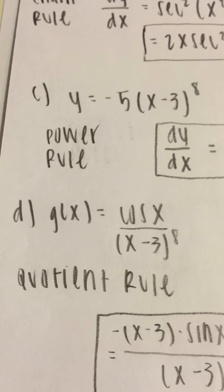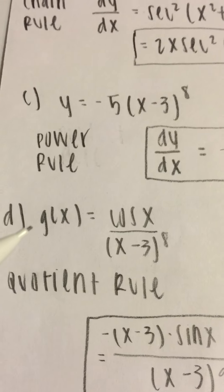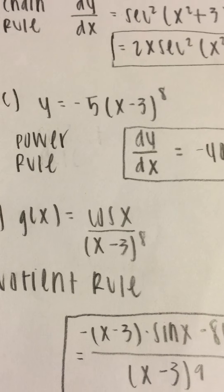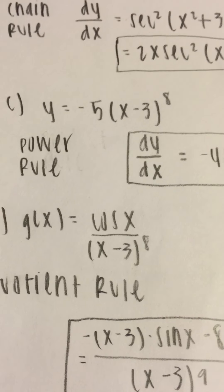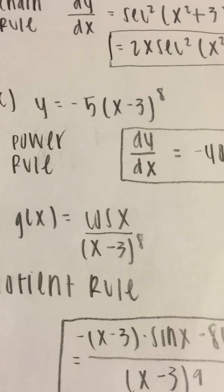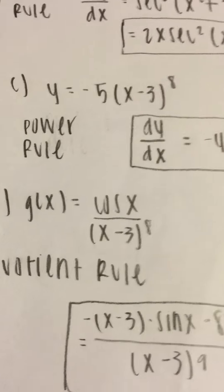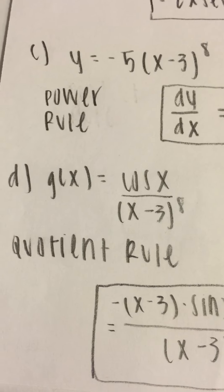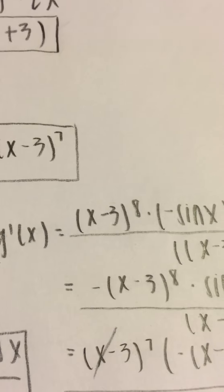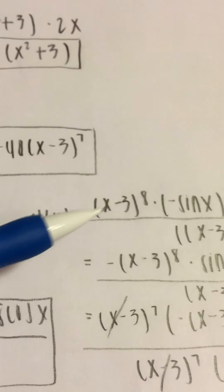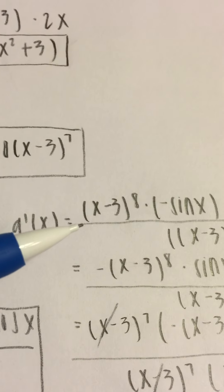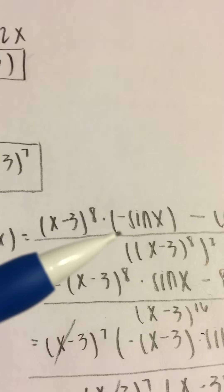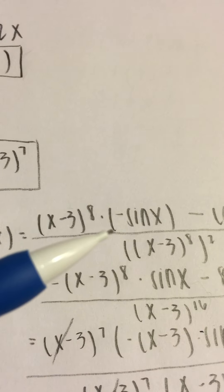For D, the function is g of x equals cosine x over x minus 3 to the eighth power. To solve this, we have to use the quotient rule. We take the bottom function, x minus 3 to the eighth power, times the derivative of the top function.